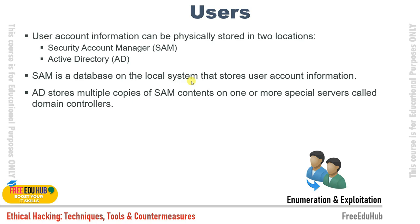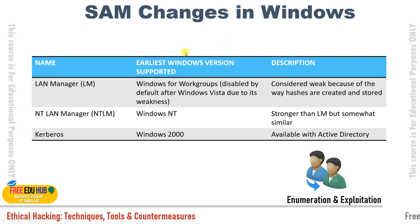The SAM file stores usernames and passwords in encrypted format so you cannot decrypt them to see actual credentials. SAM is a database on the local system, while Active Directory stores multiple copies of SAM contents on domain controllers. Windows has evolved through different authentication protocols: LAN Manager (LM) used in early Windows workgroups, NT LAN Manager (NTLM) introduced later, and currently Kerberos, used from Windows 2000 onwards with Active Directory.